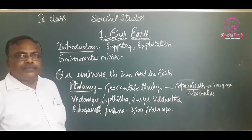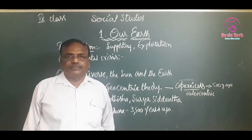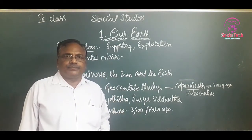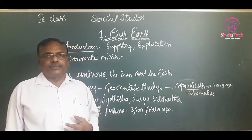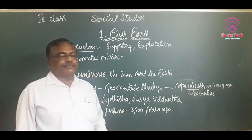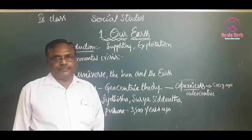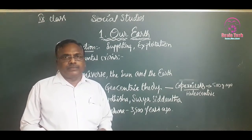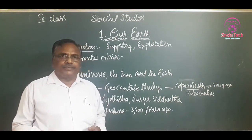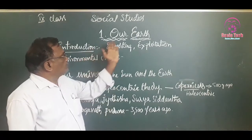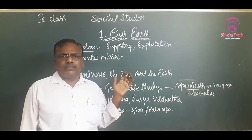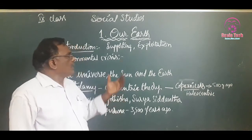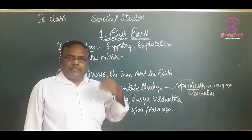Our earth, in the universe, is one of the planets in the solar system. This is our earth — the only planet supporting life: animals, human life, natural vegetation, forests. All this life is supported by our earth. Many reasons are there for this. Other planets are not supporting life; our planet is the only one supporting it.